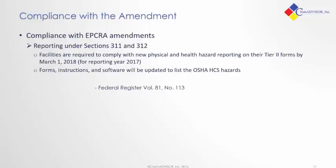We've covered the what and the why — now the when. Companies are required to comply with these new reporting requirements by March 1, 2018, which will be for the reporting year of 2017. Starting in 2017, you may see companies begin to list out the hazard communication standard endpoints rather than referencing the five hazard categories when it comes to SARA, to help with their 2018 reporting requirements. The EPA has noted that the forms, instructions, and software — such as Tier 2 Submit, the reporting software for Section 312 — will all be updated to list the OSHA hazard communication standard hazards instead of those five existing categories.